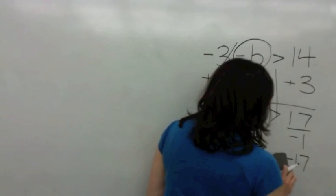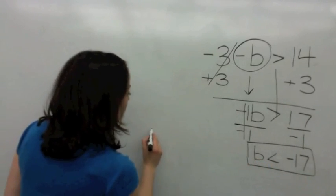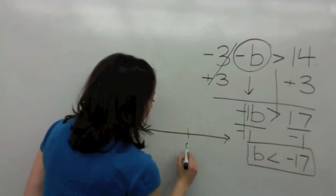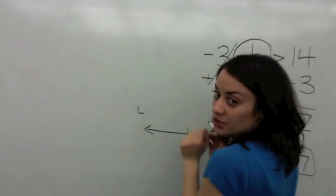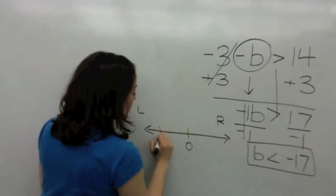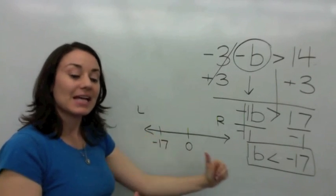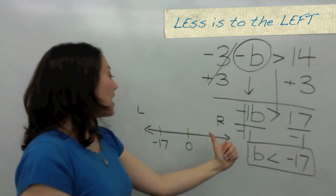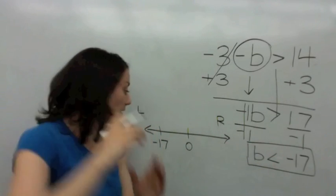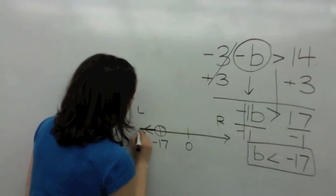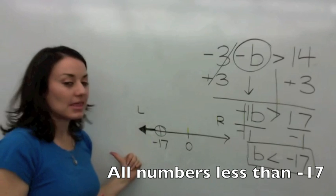Your inequality is b is less than negative 17. So let's go ahead and draw this inequality on a number line — we're going to graph it. Here is 0. Where would negative 17 be — to the left or to the right? Negative is to the left, so negative 17 will be somewhere here. What is less than negative 17? That's a smaller number. Remember that less is to the left. Is this an open circle or a closed circle? Open. So you open the circle and shade everything to the left. Your solution reads all numbers less than negative 17.